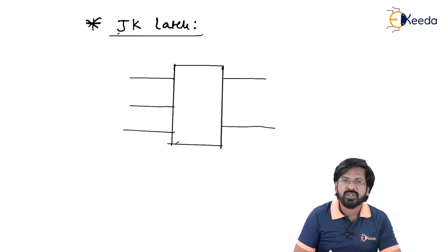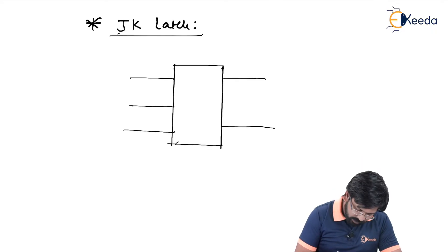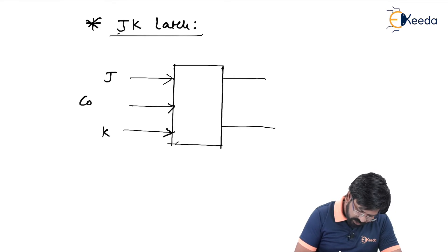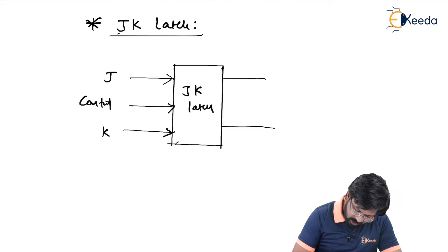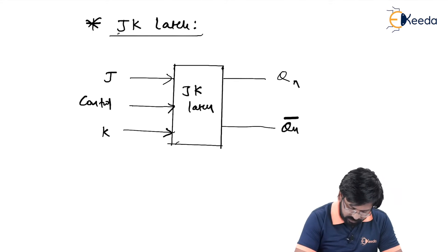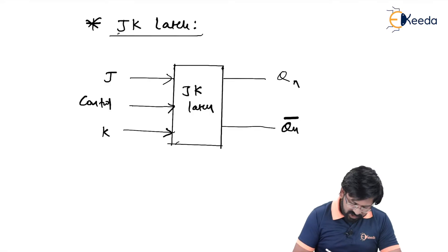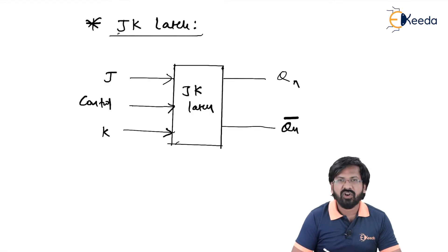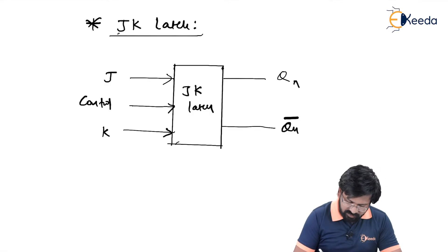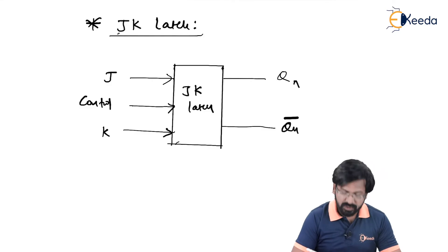Now we will study JK latch. This JK latch will have two primary inputs, which are J and K, along with a control input. The output will be Qn and Qn bar. We will see what is the effect of J and K on this latch and how it reflects into the output.